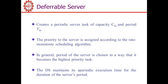In the deferrable server, we create a periodic server — a kind of periodic task with the highest priority. Periodic tasks are associated with capacity and period, and DS refers to the deferrable server. Priority to the server is assigned according to the rate monotonic scheduling algorithm. Smaller the period, higher the rate, and higher the rate means higher the priority. We schedule all tasks according to the rate monotonic algorithm.